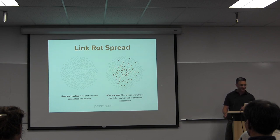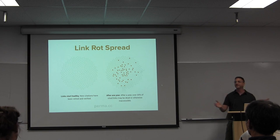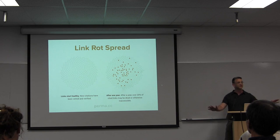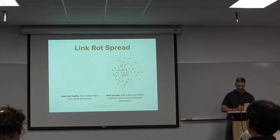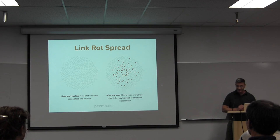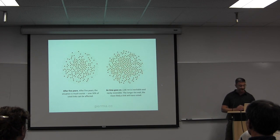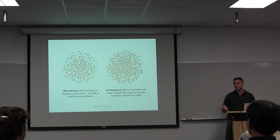I love these graphics from perma.cc. When we launch a site, the links are healthy — no little red dots. If a client notices a busted link they'll tell us about it. About a year later, over 20 percent of cited links may be dead or otherwise inaccessible according to their research. In five years it gets worse — about 50 percent of cited links can be affected. This is kind of beyond your control; these are things that you're linking out to.